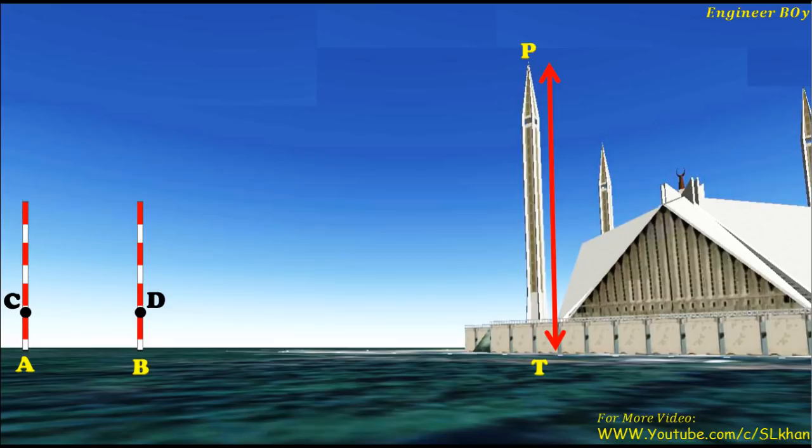After this we will mark two points, point C and D, at the same level on the ranging rods A and B. By same level I mean AC equals BD. Then we look through the line CD and mark point E on the tower.